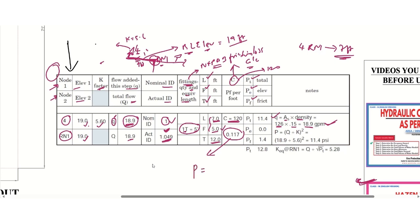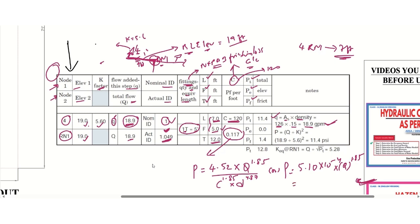The Hazen-Williams formula is: p = 4.52 × q^1.85 / (C^1.85 × d^4.87). For black steel pipe, NFPA has converted this into a simplified form: friction loss per foot = 5.1 × q^1.85 × 10^-4. With q = 18.9 gpm, we get approximately 0.117 psi per foot. This is the friction loss per foot — remember this.